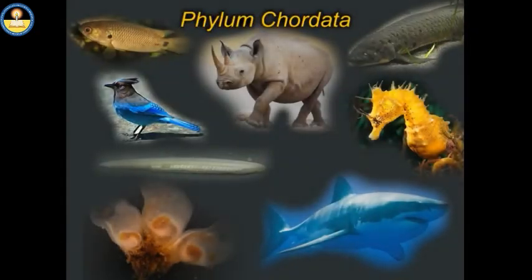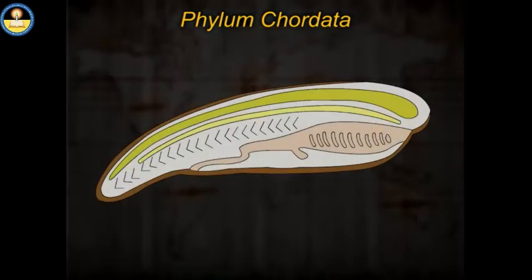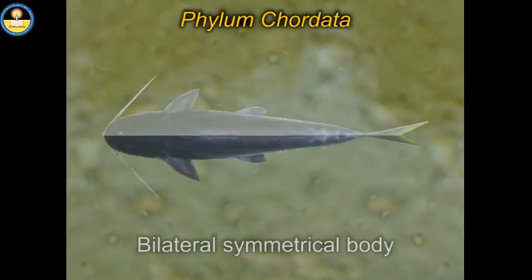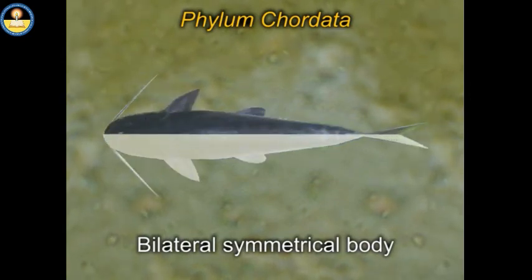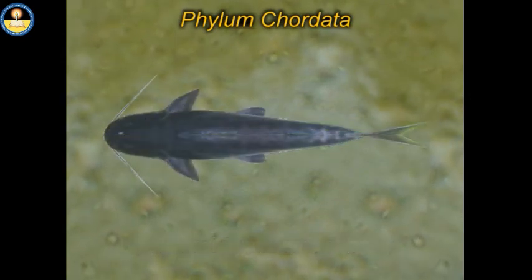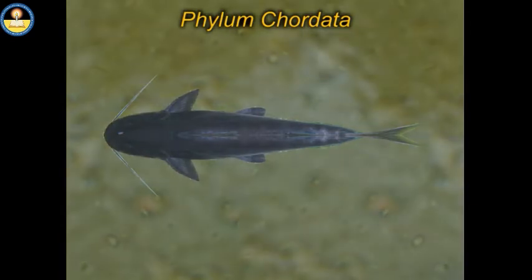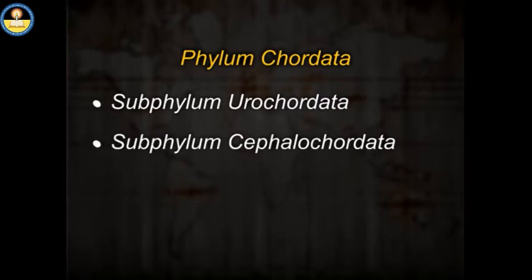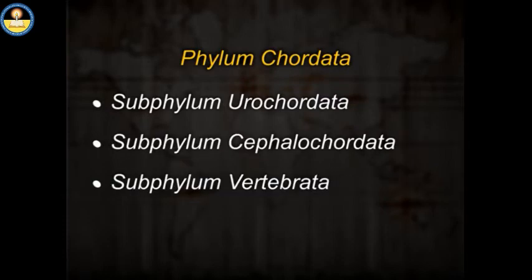Phylum Chordata. Chordates are defined as organisms that possess a structure called a notochord, at least during some part of their development. Chordates have bilateral symmetry in some stage of the life cycle. There are three subphyla in Phylum Chordata: Subphylum Urochordata, Subphylum Cephalochordata, and Subphylum Vertebrata.